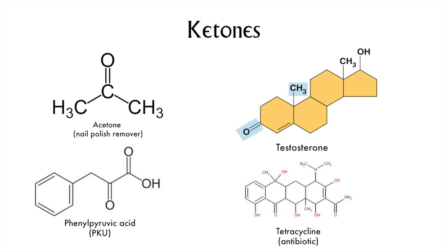Here are some examples of ketones that have biological relevance. Acetone is the simplest ketone, and it is a common solvent and an ingredient in nail polish remover. In acetone and testosterone, we can see that both of these end in O-N-E, which is commonly found in ketones. However, you don't see that in phenylpyruvic acid or in tetracycline. Phenylpyruvic acid is associated with the disease phenylketonuria, which is a genetic disorder. And tetracycline is an antibiotic.